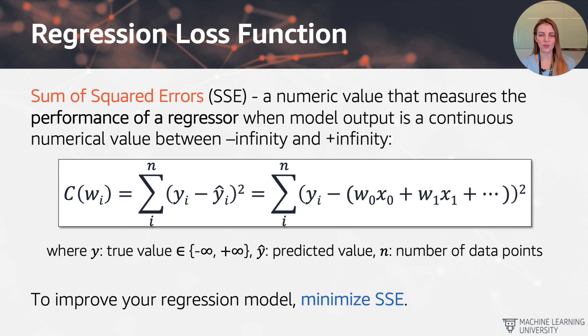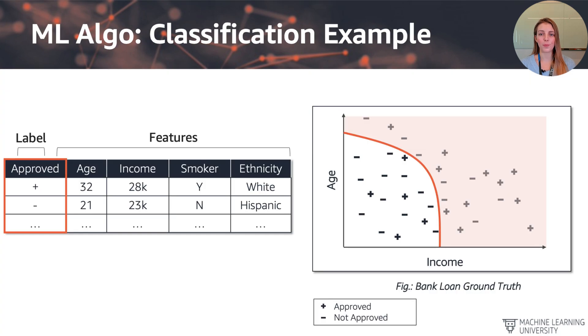Before moving on to the final ingredient, which is going to be the optimization method, we're going to have a quick look at a classification example as well. So here we have a classification example where we're going to predict approved or denied as binary outcome, yes or no. And on the right hand side, we have a chart that illustrates the approved and denied area.